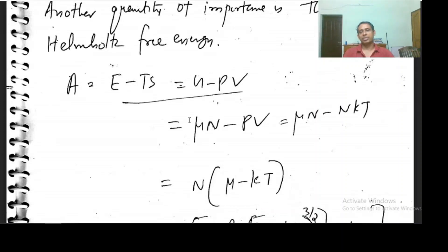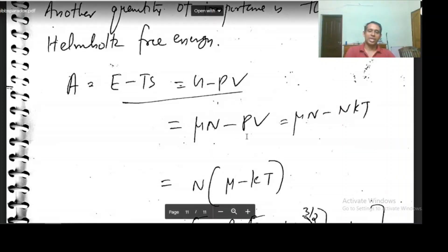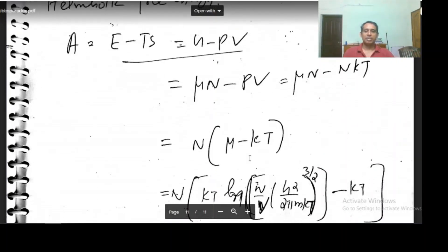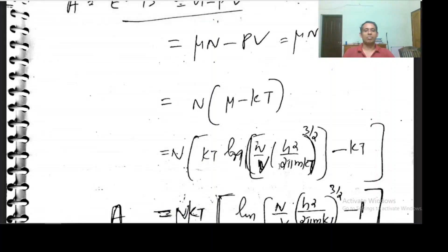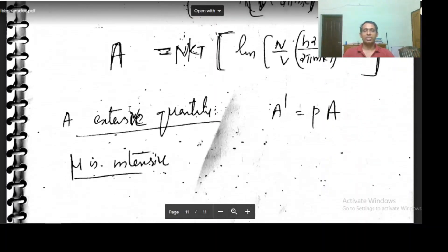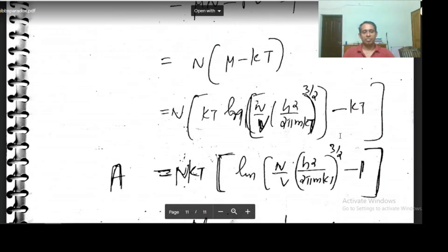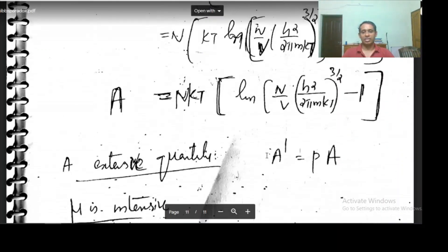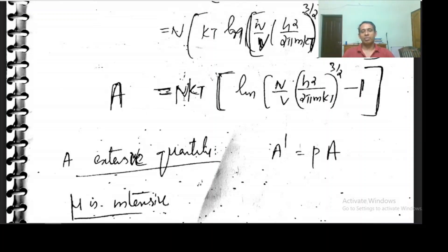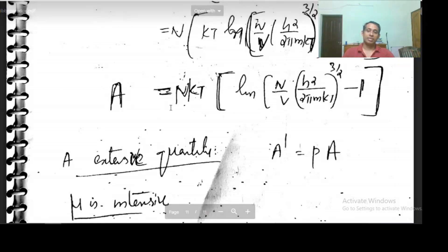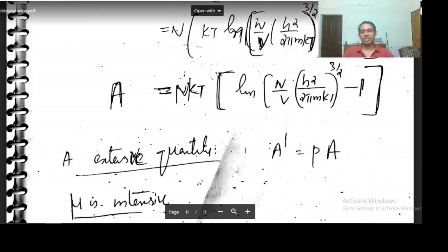Plugging in μ, we get A = nkT log(n/v) + nkT log[(h²/2πmkT)^(3/2)] − nkT, so A = nkT [log(n/v) + log(h²/2πmkT)^(3/2) − 1]. This is the expression for Helmholtz free energy, and we can see it is an extensive quantity: A′ = pA when system size increases by p.